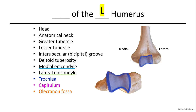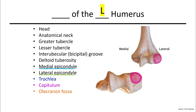The trochlea is the portion that our ulna pivots on when we flex and extend our forearm. The capitulum is the rounded head that our radius rotates upon when turning the palm up to hold a cup or over to pour it out.